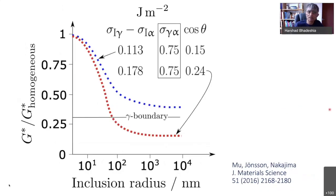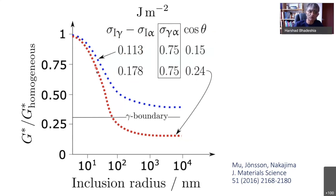Some more modern calculations refer to the same sort of calculation, but this time taking account of the difference in the interfacial energy between the austenite and the inclusion and the ferrite and the inclusion. What this shows is that when the difference in interfacial energy between austenite-inclusion and ferrite-inclusion is large, it is actually possible to stimulate nucleation on inclusions in preference to austenite grain surfaces.